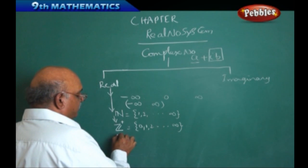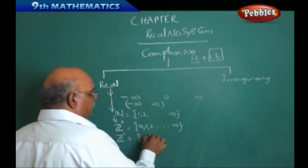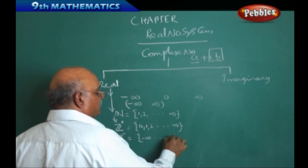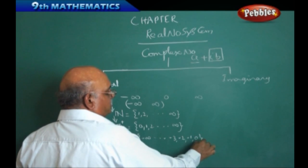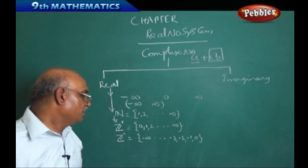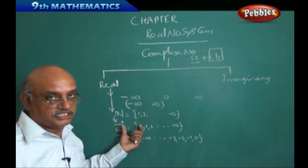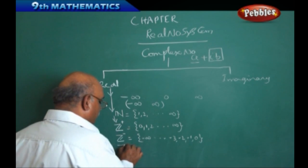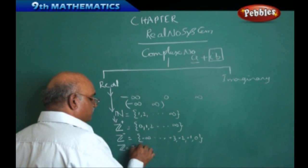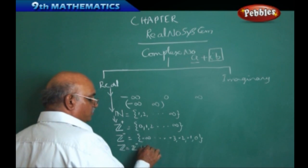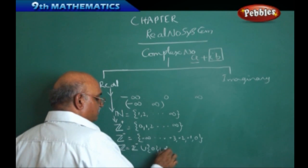Negative integers, denoted z-minus, are written from minus infinity up to minus 3, minus 2, minus 1, and 0. The combination of z-minus and z-plus is called integers. Therefore, z equals the union of negative integers, union {0}, union z-plus.